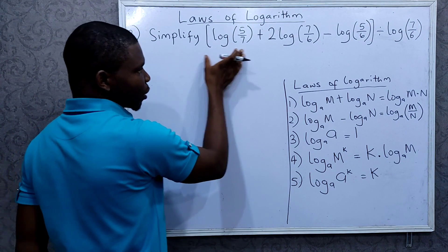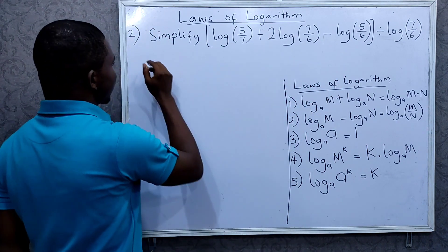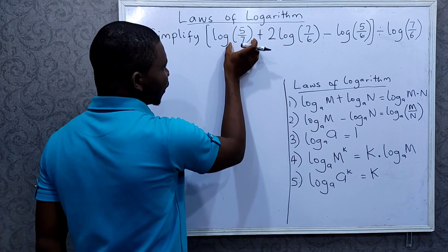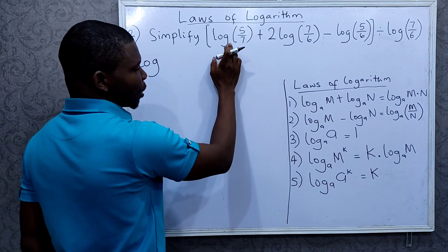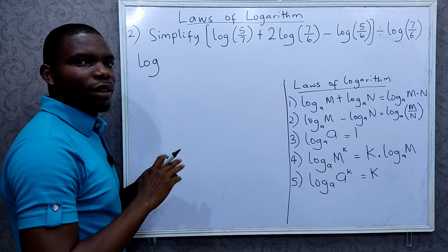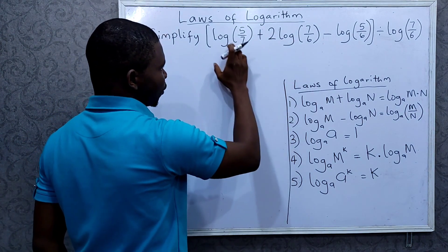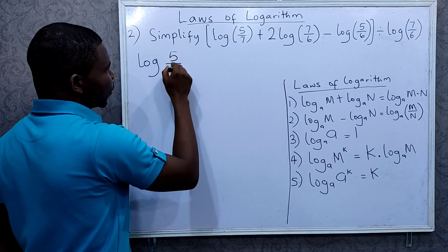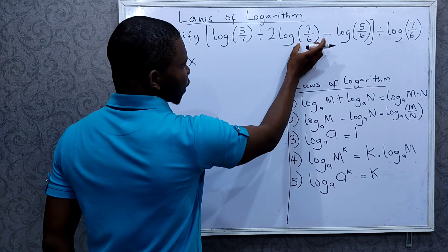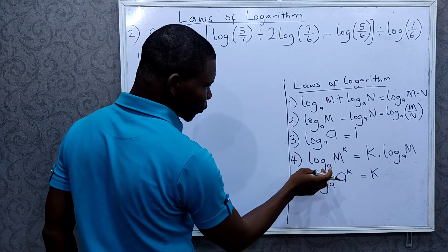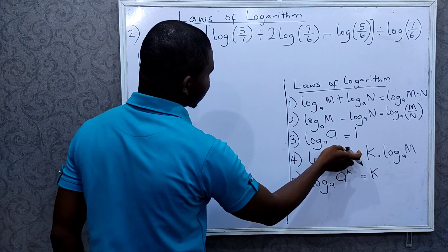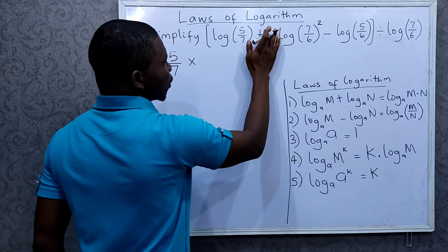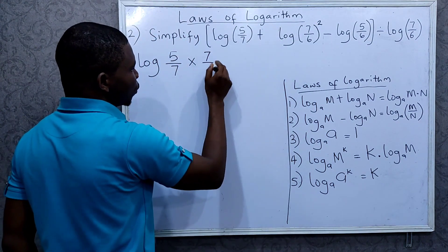According to BODMAS, we solve everything in the brackets first. When you have logarithms in the same base added together, you multiply the arguments. When the base is left empty, you take it as base 10, so they are all in base 10. So I multiply the arguments: 5 over 7 times 7 over 6. And there's a power of 2 here — according to the fourth law, this power can be written in front. So this becomes 7 over 6 squared.